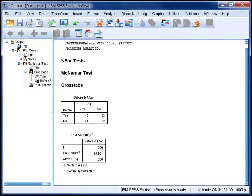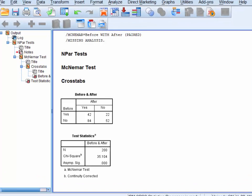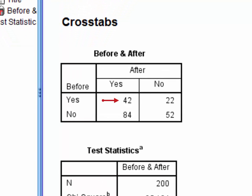Two tables of output are provided by SPSS. In the first we can see that 42 people were in favor of stem cell research before watching the documentary and remained in favor of this type of research after the documentary.